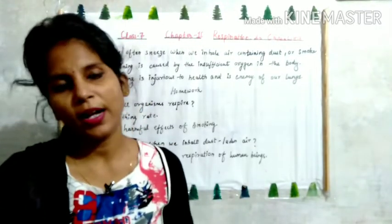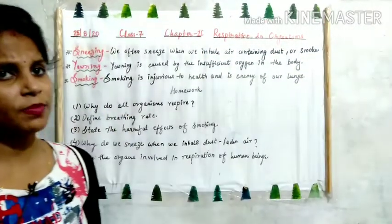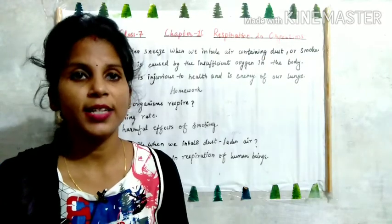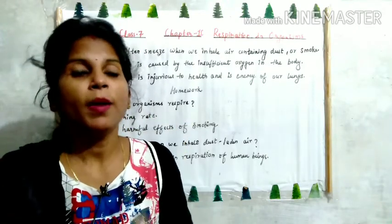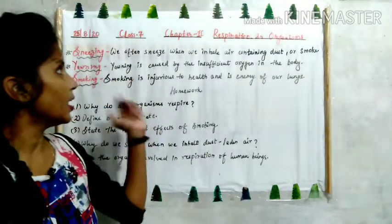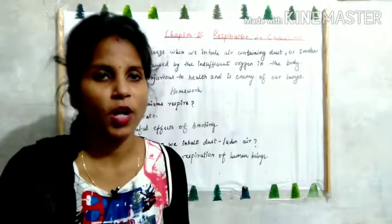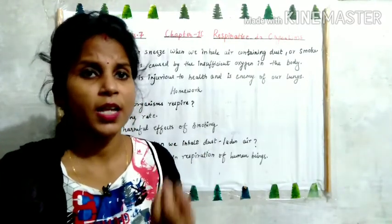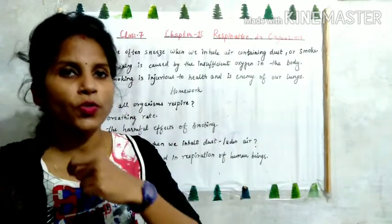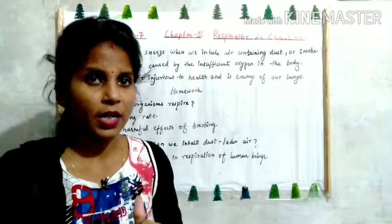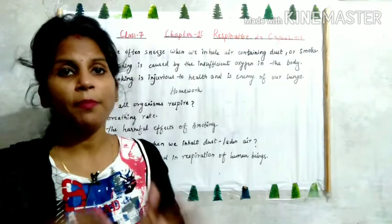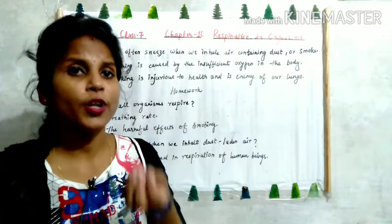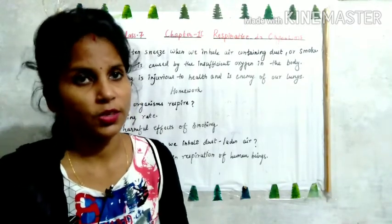Some actions related to breathing are sneezing, yawning, and smoking. Sneezing — cheetna — is an expulsion of air through our nose when there is irritation in the nasal passage. We often sneeze when we inhale air containing dust or smoke. The air we breathe contains impurities like dust particles, pollen grains, and smoke. When they enter, hairs in the nose trap them in mucus. If the impure air passes through the nasal passage, it causes irritation and we sneeze — to prevent impure air from getting into our lungs.